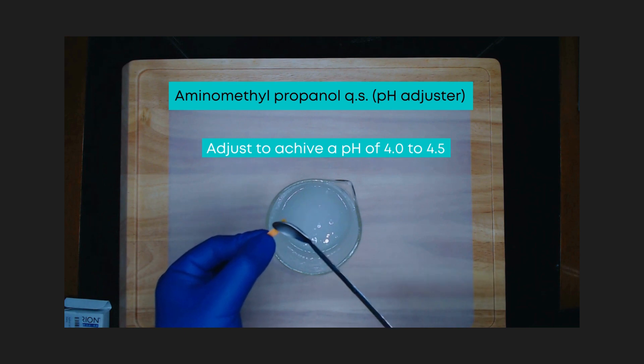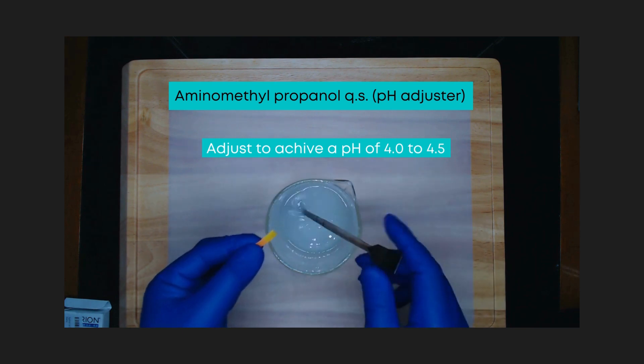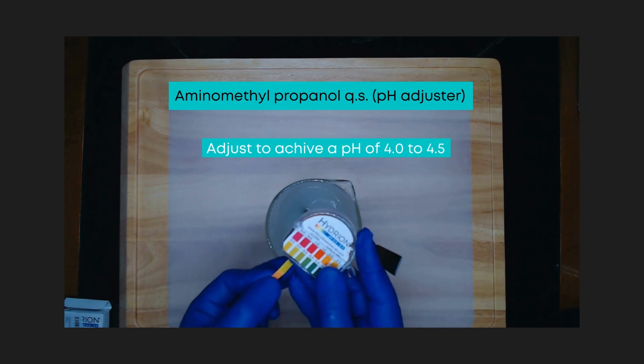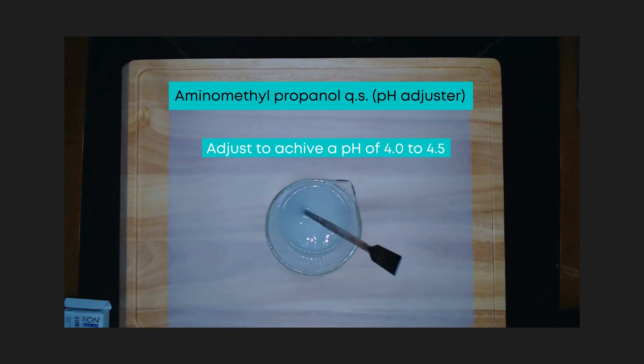Now, let's check and adjust the pH. Add aminomethyl propanol as needed to achieve a pH of 4.0 to 4.5. You can also use other pH adjusters such as triethanolamine or sodium hydroxide.